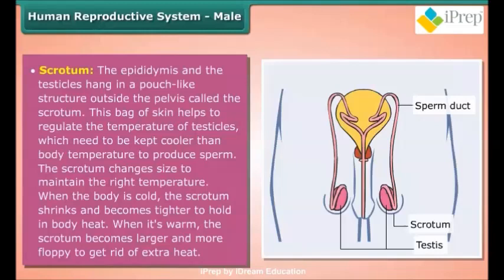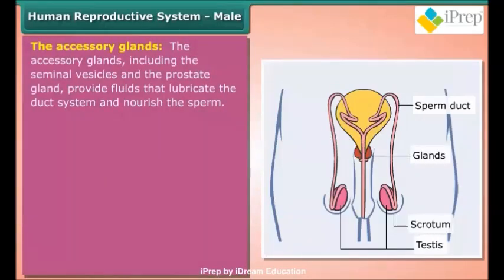Scrotum: The epididymis and the testicles hang in a pouch-like structure outside the pelvis called the scrotum. This bag of skin helps to regulate the temperature of the testicles, which need to be kept cooler than body temperature to produce sperm. When the body is cold, the scrotum shrinks and becomes tighter to hold in body heat; when it is warm, the scrotum becomes larger and more floppy to release extra heat.